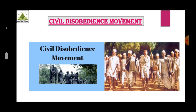Before beginning this movement, Gandhiji put up various demands in front of the British government. One of the important demands was to cancel the salt tax and monopoly of the British government for manufacture of salt. But because Gandhiji's demands were rejected by the government, he decided to launch Satyagraha all over India by breaking the salt act.